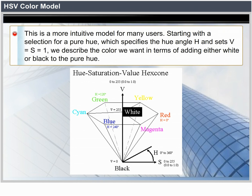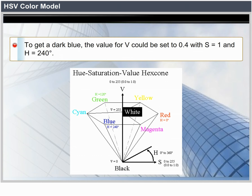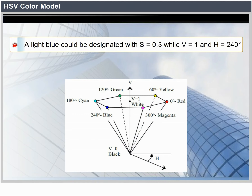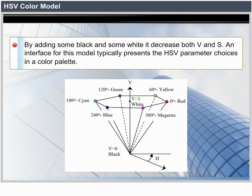Starting with the selection for a pure hue — which specifies the hue angle H and sets V equals S equals 1 — we describe the desired color by adding either white or black to the pure hue. Adding black decreases V while S is held constant. To get a darker blue, V could be set to 0.4 with S equals 1 and H equals 240 degrees. When white is to be added, parameter S is decreased while keeping V constant. A light blue could be designated with S equals 0.3, V equals 1, and H equals 240 degrees. By adding some black and some white, we decrease both V and S.